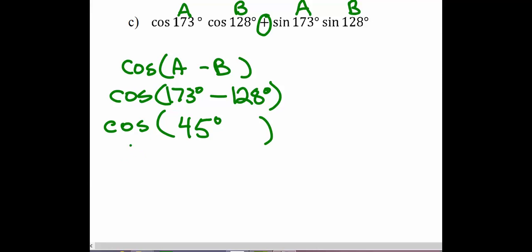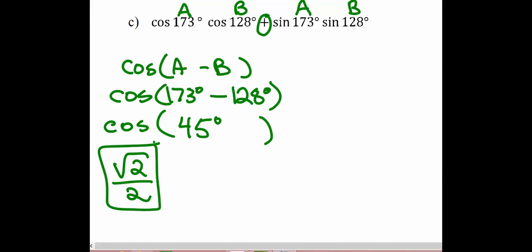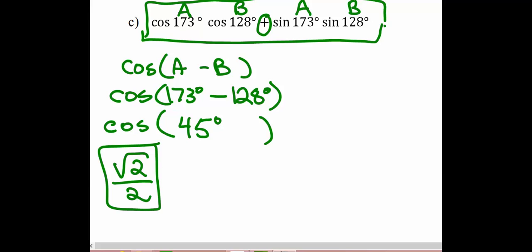That gives us cosine of 45 degrees. And we know that cosine of 45 degrees is square root of 2 divided by 2. So we can also use the cosine identity in the other direction: if we have the pattern for the right side of the identity, we can convert it to the left side — writing the two angles back inside the cosine input being subtracted — and simplify to cosine of 45 degrees, which is square root of 2 divided by 2.